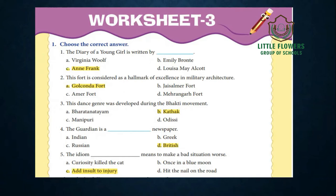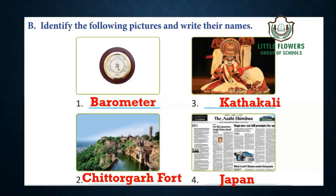Number five: the idiom 'add insult to injury' means to make a bad situation worse. In the second question, you have to identify pictures. First is a barometer — an instrument used to measure air pressure. Second is Chittorgarh Fort, the largest fort in India, located in Rajasthan. Third is Kathakali, a classical Indian dance form of Kerala. Fourth is the Asahi Shimbun, a famous newspaper of Japan.